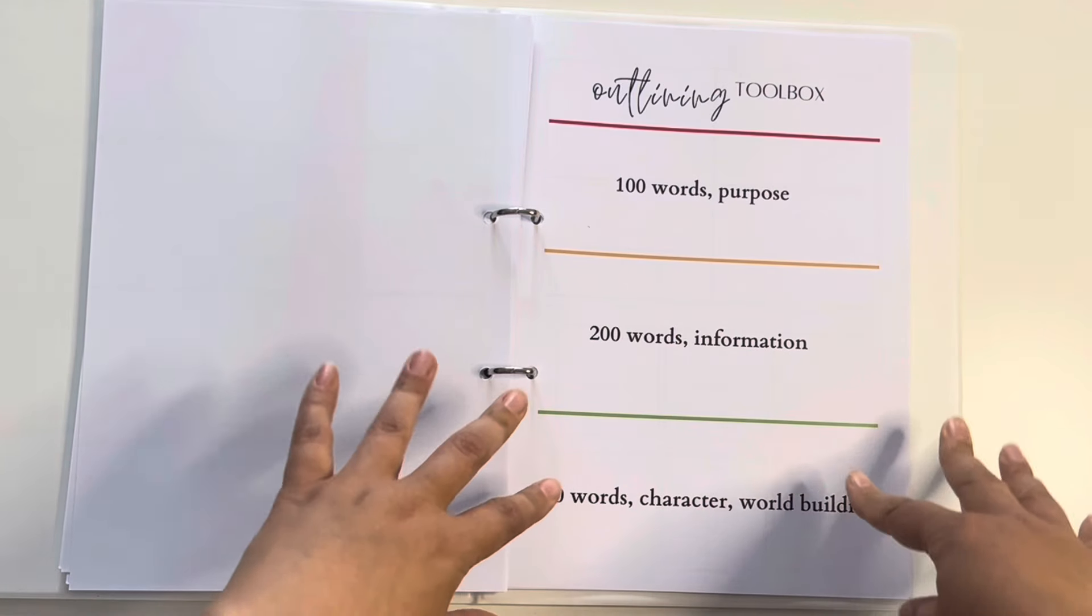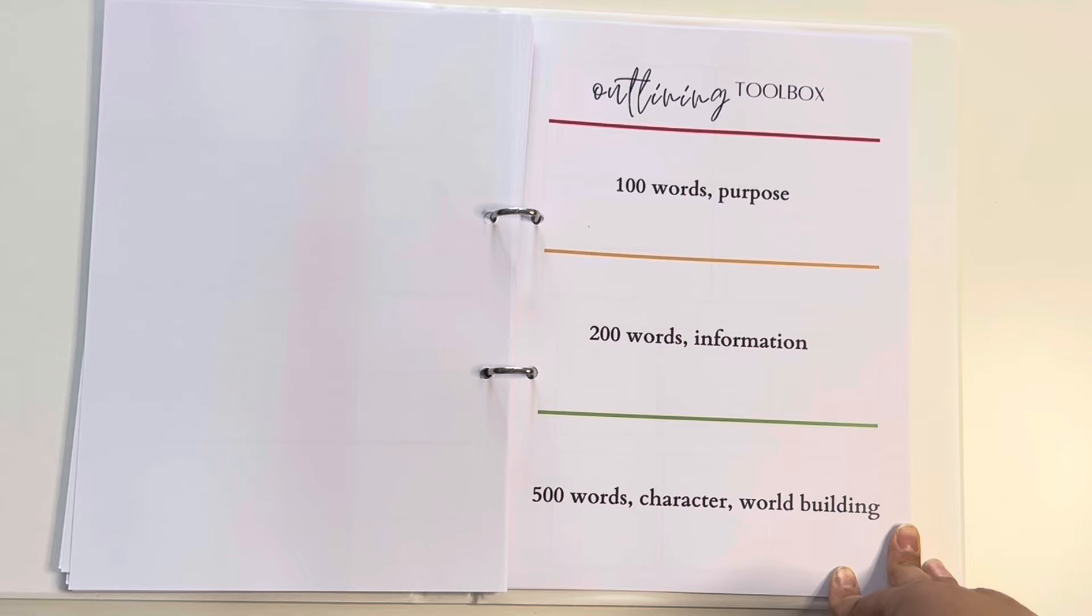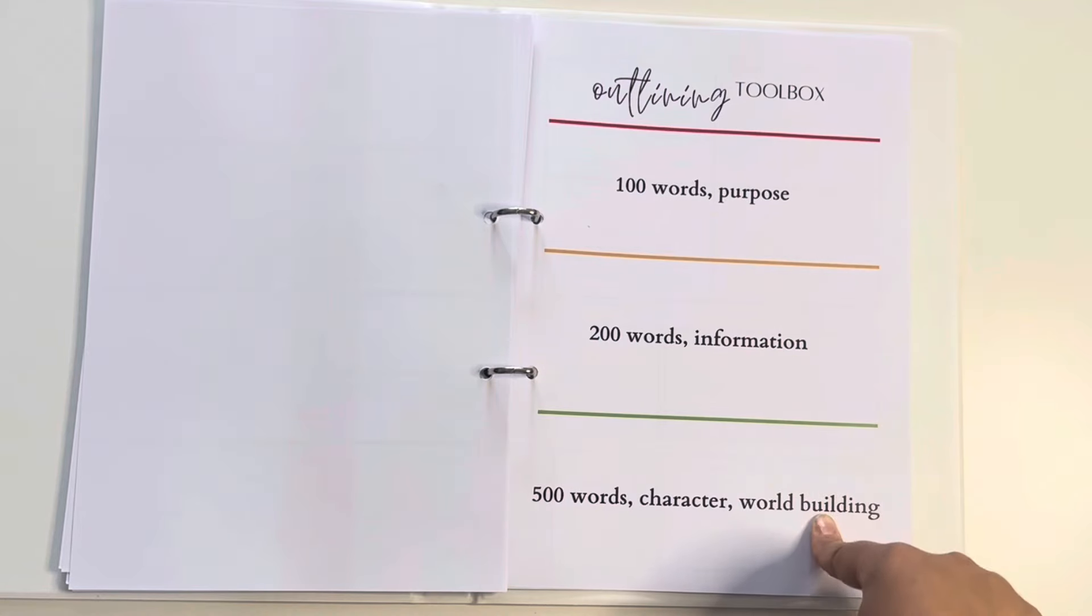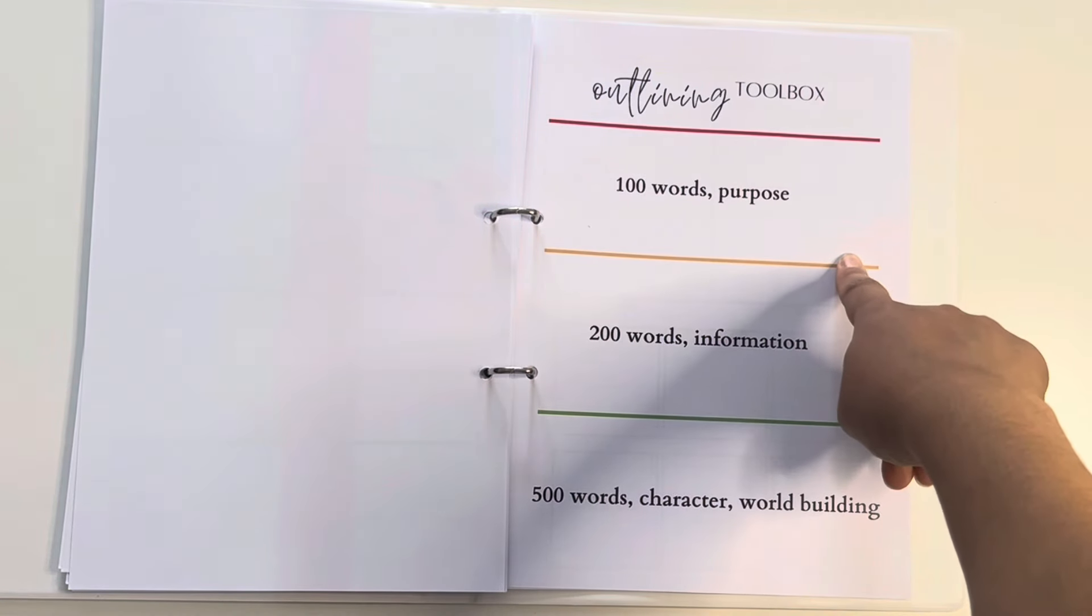And then we have my outlining toolbox, which is the most important thing in the world. This is what I need to reference when I am actually doing my outlining. So we have again, red, orange, green. At minimum, I'll need 100 words for each of the chapters I outline and the main purpose of that chapter.